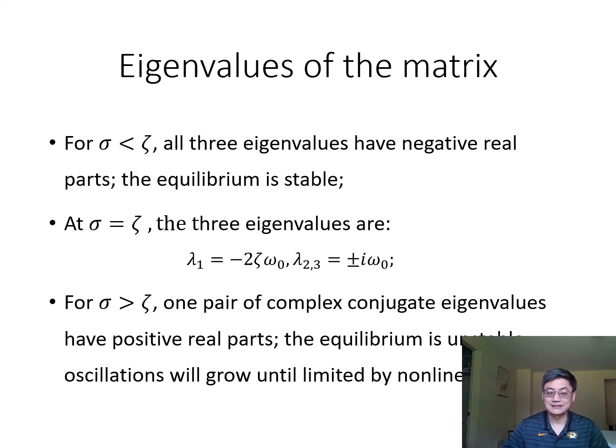When σ equals ζ, which represents the criticality, we have one negative eigenvalue and a pair of pure imaginary eigenvalues. For σ above ζ, we have one pair of complex conjugate eigenvalues with positive real parts and one negative eigenvalue. That is the case corresponding to growing amplitude oscillations.